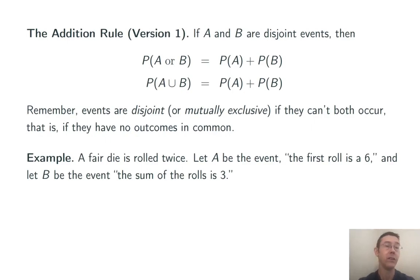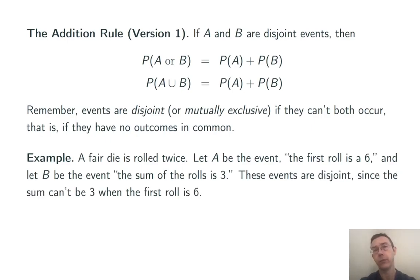Let's have an example using this version of the addition rule. A fair die is rolled twice. Let A be the event the first roll is a 6 and let B be the event the sum of the rolls is a 3. These are mutually exclusive events. They're disjoint. They can't both occur. These two events have no outcomes in common. If the first roll is a 6 there's no way the sum can be 3.